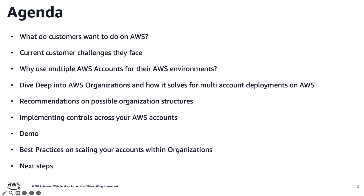Before we get started, let's do a quick rundown on the topics we will cover today. We will first understand what customers want to do on AWS and identify current challenges they face. We will explore why they choose to use multi-accounts, then dive deep into AWS Organizations and how it solves for multi-account deployments. I will provide recommendations on possible organization structures, guidance on implementing controls, a console demo, and finally summarize best practices and next steps.